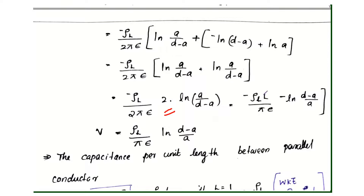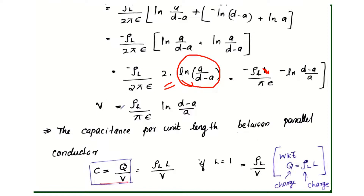So minus rho_l divided by pi epsilon times ln(A by D minus A). Cancelling the minus sign, we get V equals rho_l divided by pi epsilon times ln(D minus A by A).